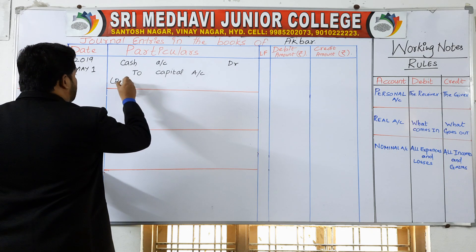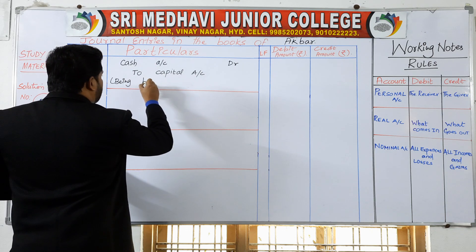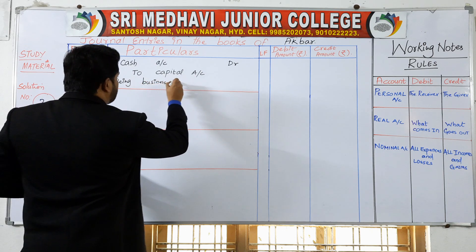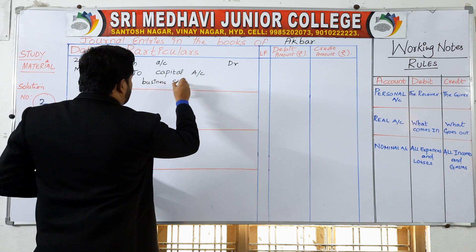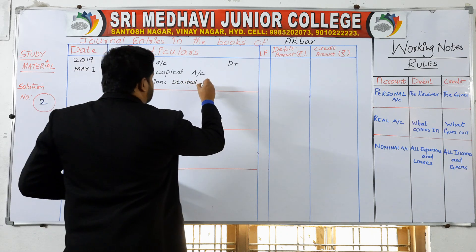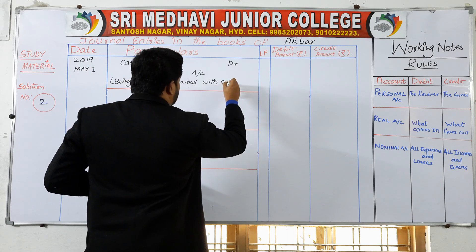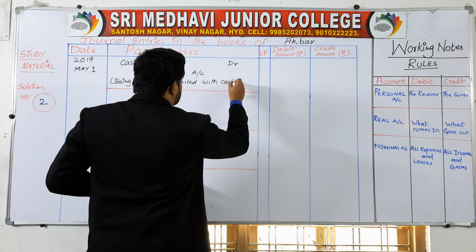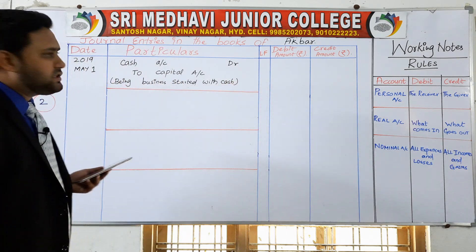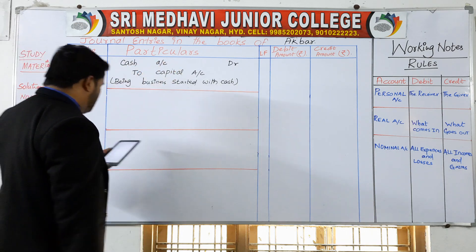You have to write a narration after writing the journal entry, like this: 'Being business started with cash.' This is called narration — you write it after completing the journal entry.